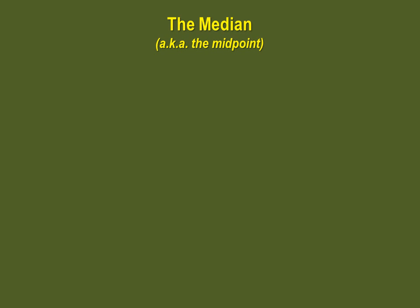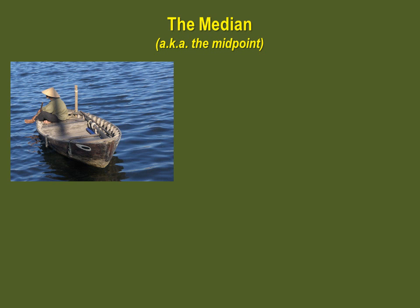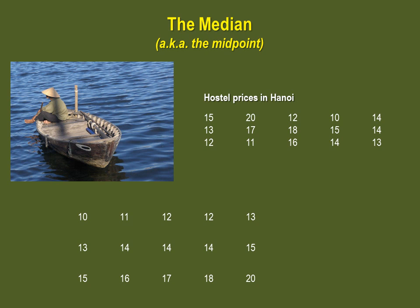A second measure of central tendency is the median, which is also known as the midpoint of your data set. There are only two steps: first, arrange your data in order, and then select the middle value. Imagine you are looking for hostels with air conditioning in Hanoi, and you want to pick the one that falls straight in the middle. Once arranged in order as a data array, you pick the middle value. Since you have an odd number of values, the median is an actual value in your data set — $14.